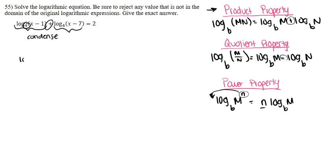When we condense this, we want to keep our same base. We're going to rewrite it as log base 4, with a bracket because we have two sets of parentheses in our argument: (x - 1) times (x - 7), and that is equal to 2.